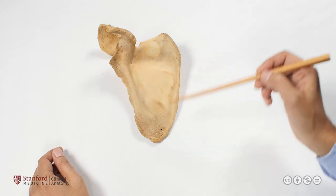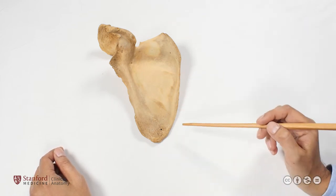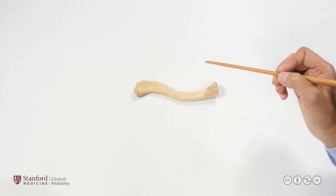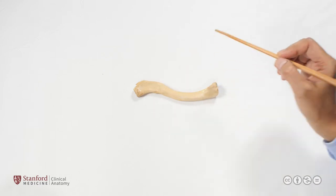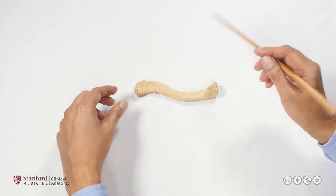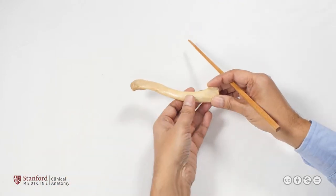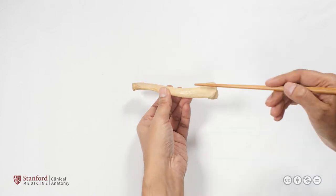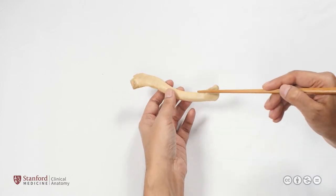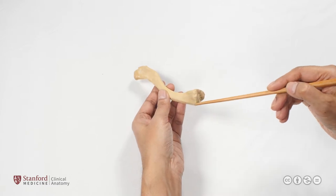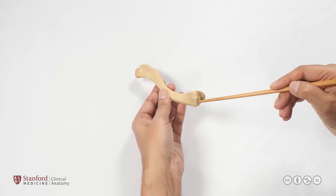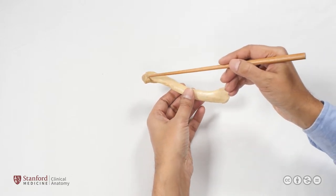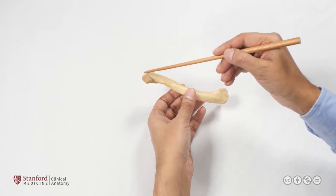Knowing all those features, this can only be the right scapula. Here we have the clavicle bone. Note that it is a lazy S-shaped bone with a flat end on one side and a very rounded end on the other. The rounded end is the medial end, which articulates with the sternum, whereas the flat lateral end articulates with the acromion process.